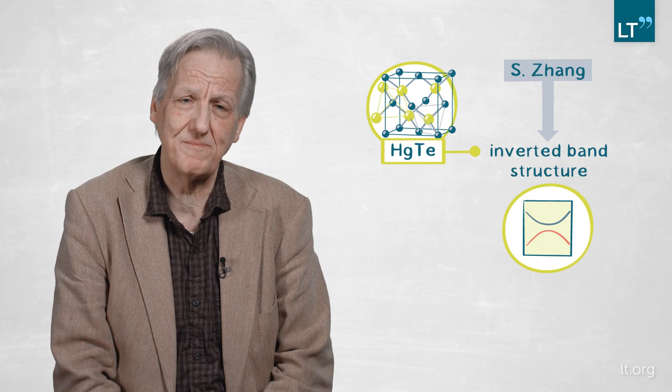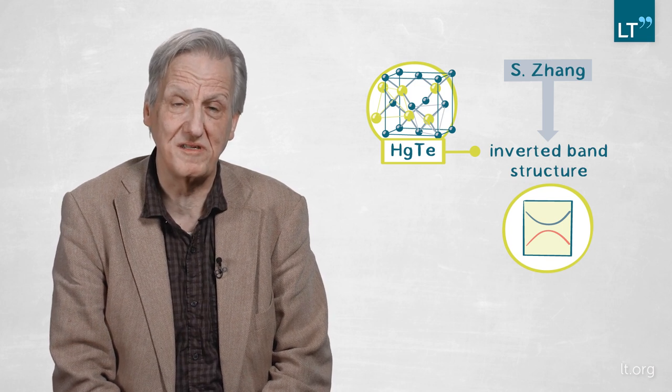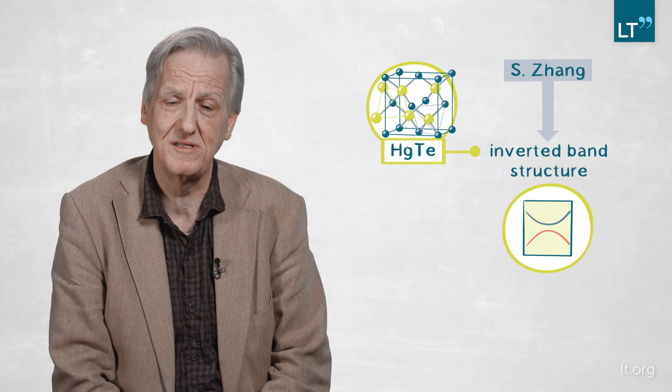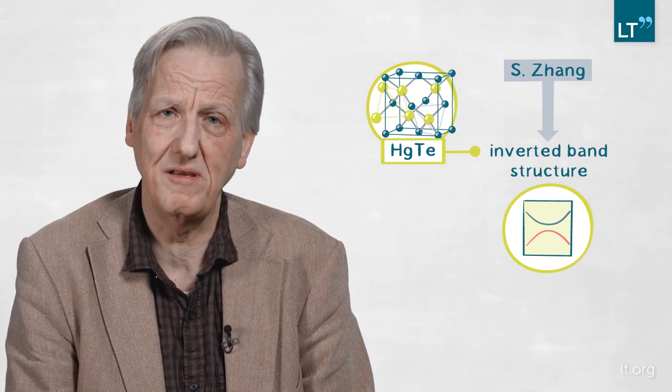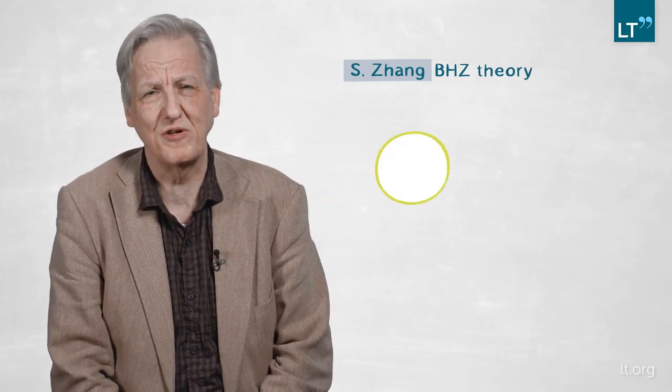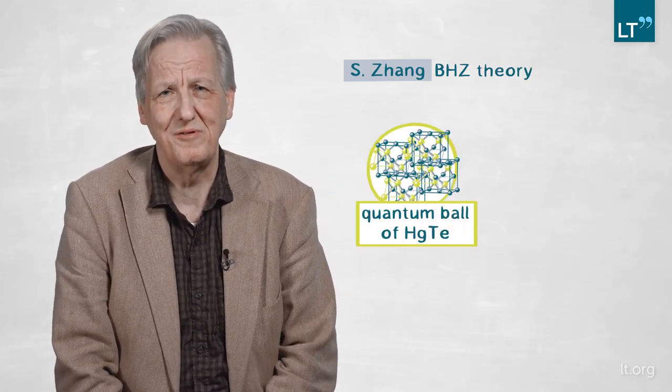I discussed this band structure with Shou-Cheng Zhang, a theorist from Stanford, and gave him a PhD thesis describing our band structure calculations. Very soon he came back with a theory, now known as the BHZ theory, showing that indeed if you make a quantum well of mercury telluride you can expect to see the quantum spin Hall effect. Well before this paper was published, we were already doing the experiment because we were talking with the guys. Around the same time the BHZ paper was published, around Christmas, we saw quantization of the spin Hall conductance in very small nanostructures made out of mercury telluride quantum wells.